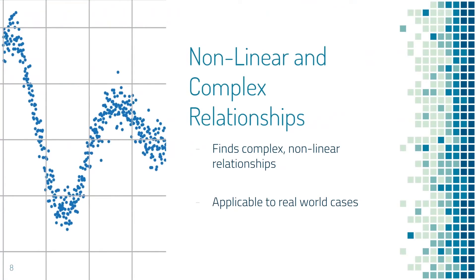Neural networks are much better at inferring hidden relationships between data points than other machine learning systems, because each neuron is fed all the information. They can also find and approximate complex relationships and functions, which are very common in the real world. For example, they can classify a complex relationship like how well a certain person can pay back a loan based on a number of factors like age, income, and so on. Neural networks are able to approximate this function through fine-tuning their parameters and reducing their error rate over time.